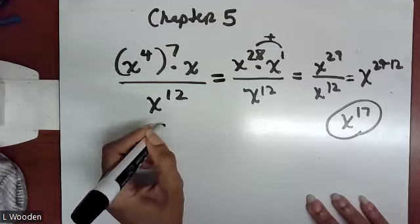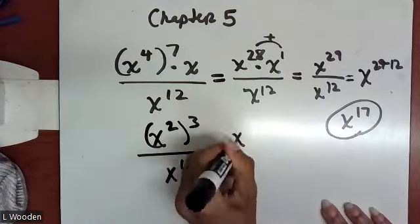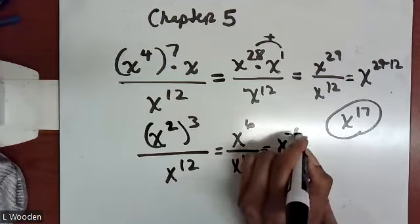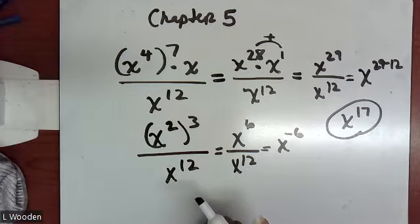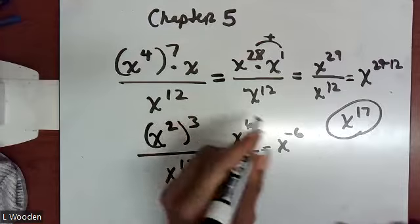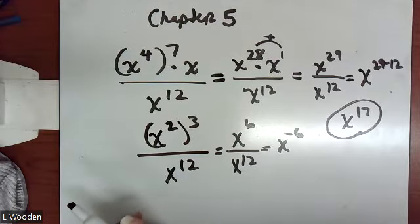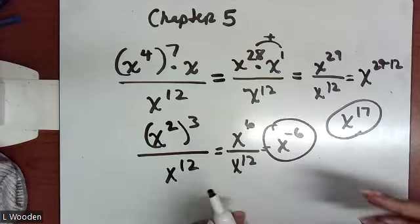If we were to have x² to the third power, that gives us x⁶ over x¹². When you do the subtraction, you get x to the negative six. Remember, there is no such thing as a negative exponent in a literal sense — the definition of an exponent is to multiply the base to itself that number of times. What does it mean to multiply x to itself negative six times? It doesn't mean anything. Negative exponents only occur because of a shortcut introduced to avoid writing out and canceling variables.